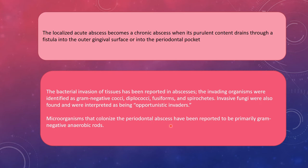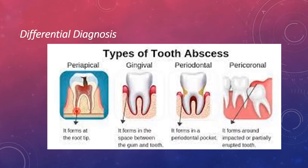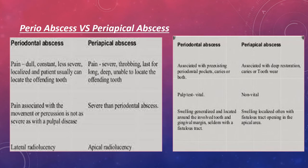For differential diagnosis, the various abscesses include periapical abscess, gingival abscess, periodontal abscess, and pericoronal abscess. Periapical abscess forms at the root apex; gingival abscess in the space between gingiva and tooth; periodontal abscess in the periodontal pocket; and pericoronal abscess around an impacted or partially erupted tooth. Comparing periodontal and periapical abscess: periodontal abscess pain is dull, constant, less severe, and localized, with the patient usually able to locate the offending tooth; whereas periapical abscess pain is severe, throbbing, lasts longer, is deep, and the patient is unable to locate the offending tooth.